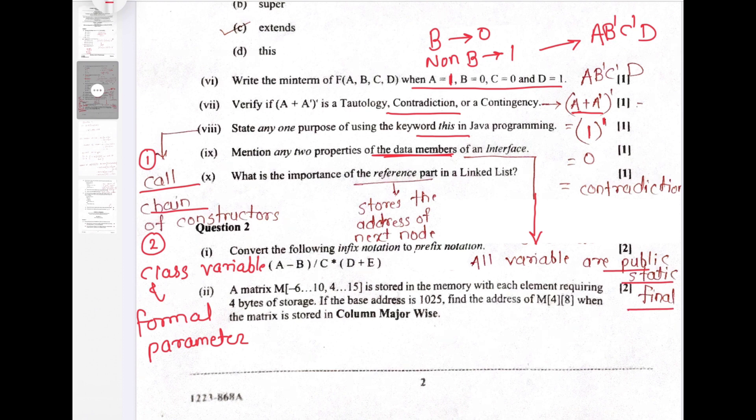What is the importance of reference part in a linked list? Now reference part in a linked list, what does it store? It stores the address of next node. So actual importance of reference part is it stores the address of next nodes in a linked list, or we can say it keeps the track of next nodes present in the linked list.